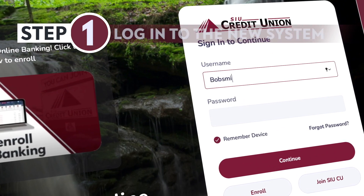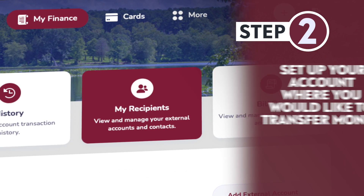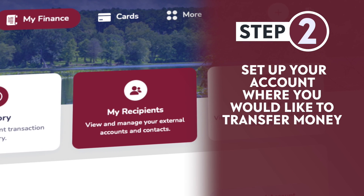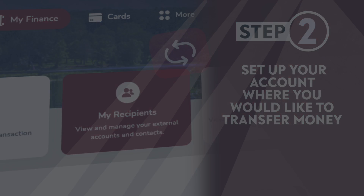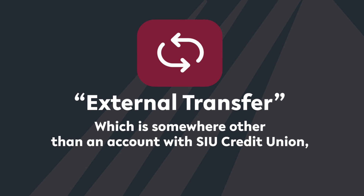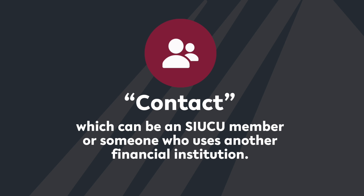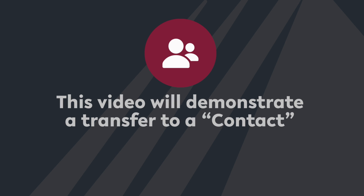Step 1: Log in. Step 2: Set up your accounts where you'd like to transfer the money to. An external transfer is somewhere other than an account with the SIU Credit Union. Or a contact, which can be an SIUCU member or someone who uses another financial institution. This video will demonstrate a transfer to a contact.